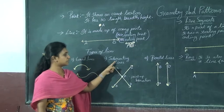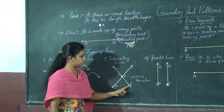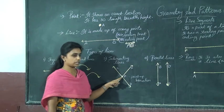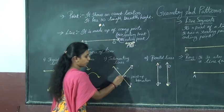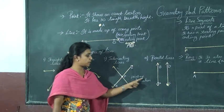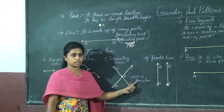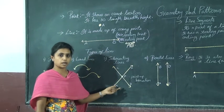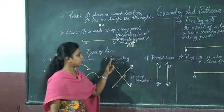Then comes intersecting lines. Intersecting lines means here we have two lines: Line CD and Line AB. They cross at one point called the point of intersection. They intersect at a point, and that point is named P.